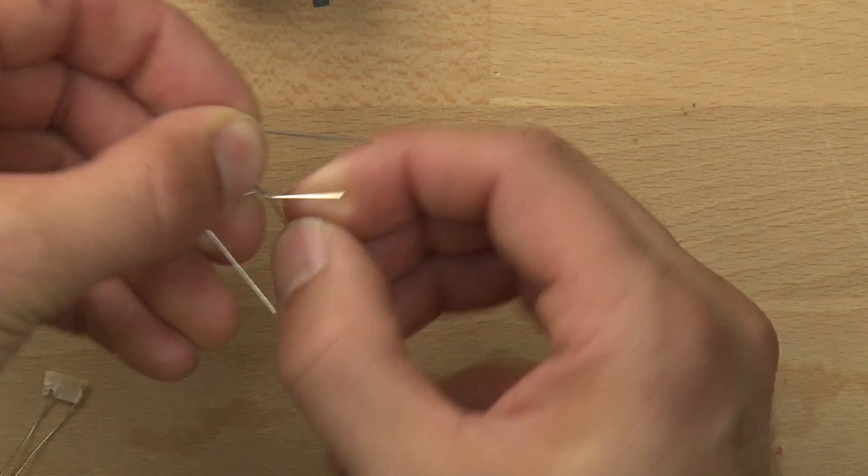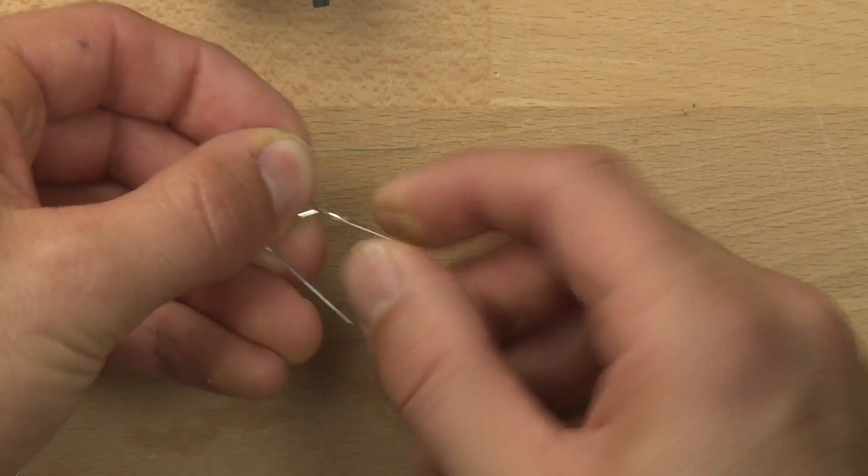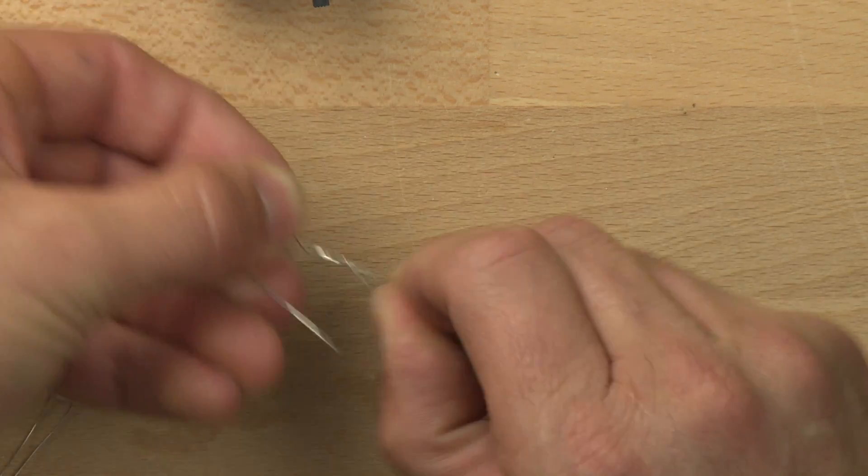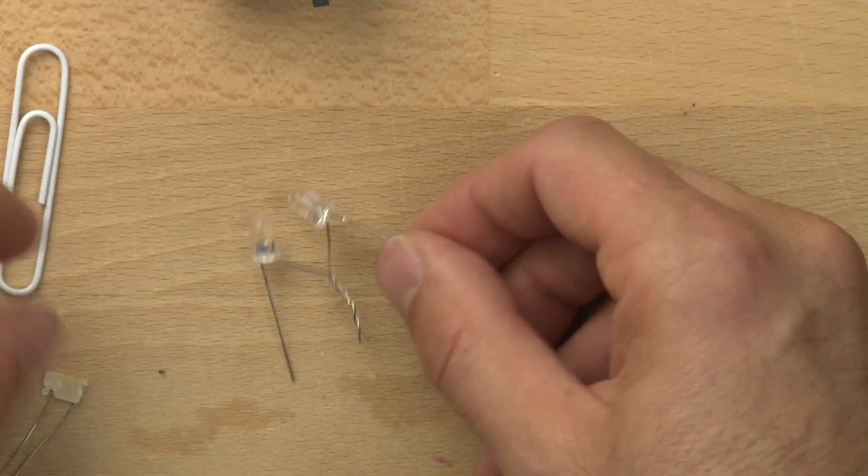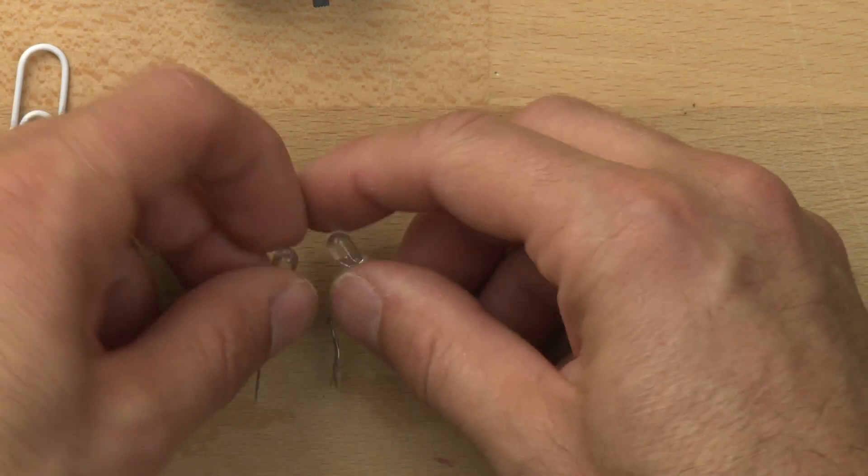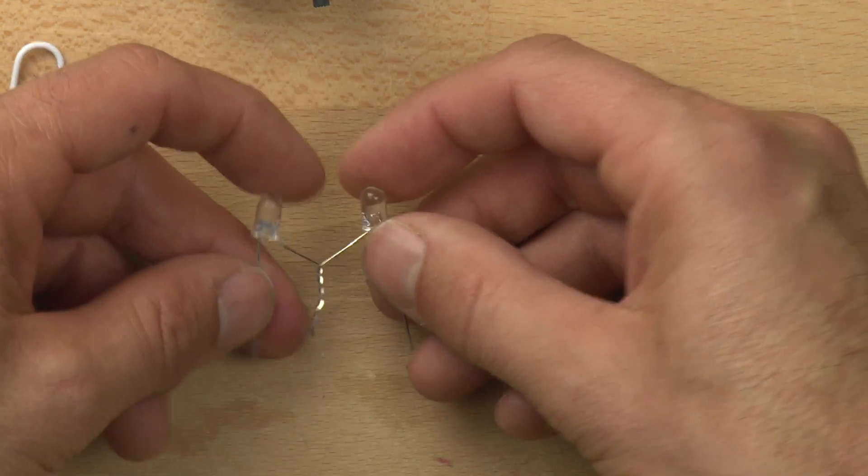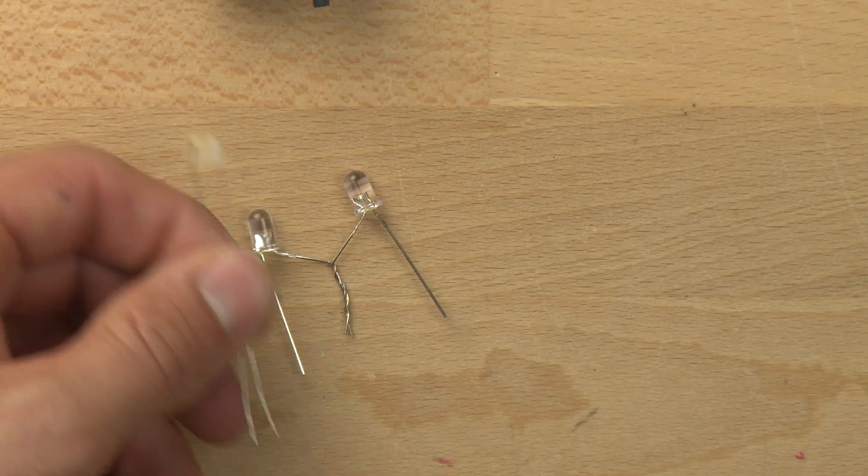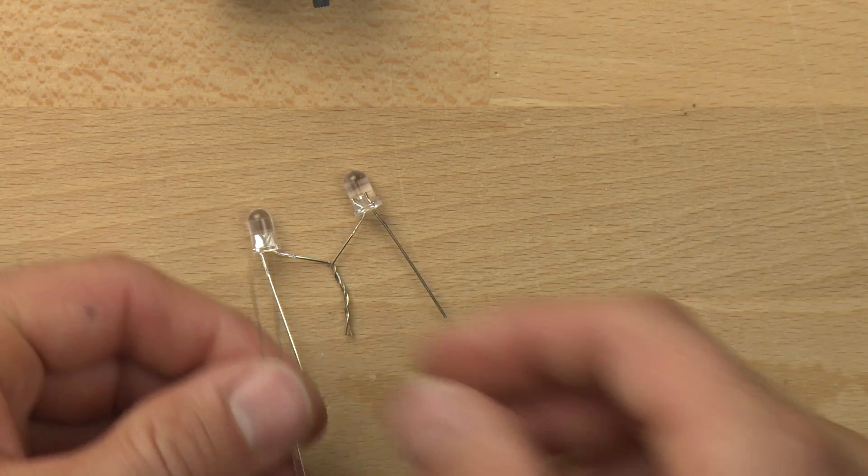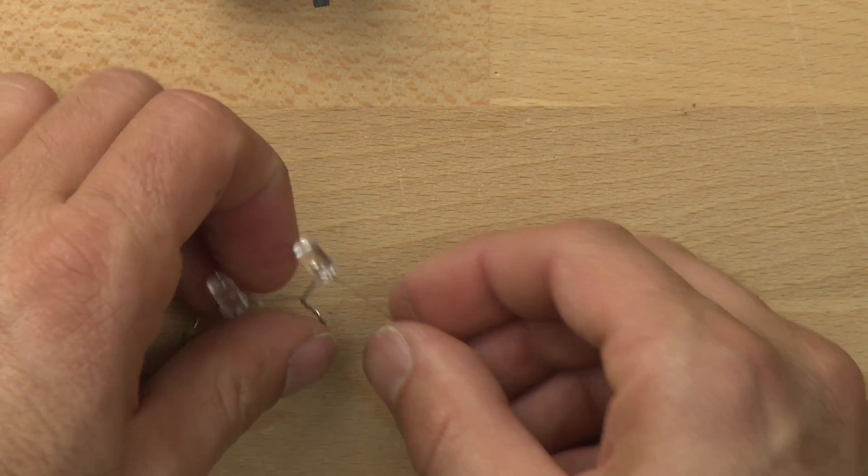We can do that just by twisting these wires together or these legs together like this. Now, in order for the LEDs to function properly, they have to have resistors. We need resistors because otherwise the LEDs will draw too much current from the batteries and they'll burn out.